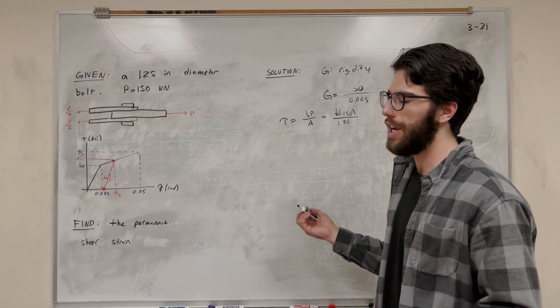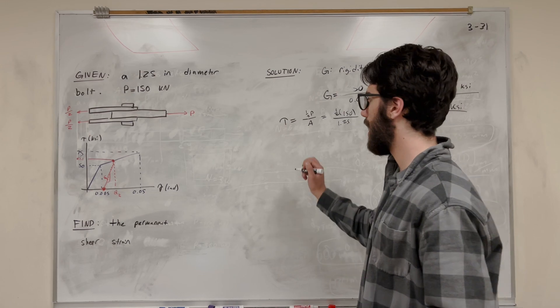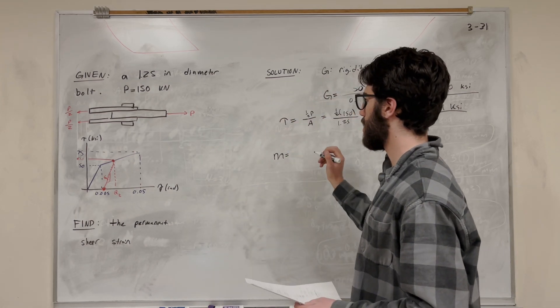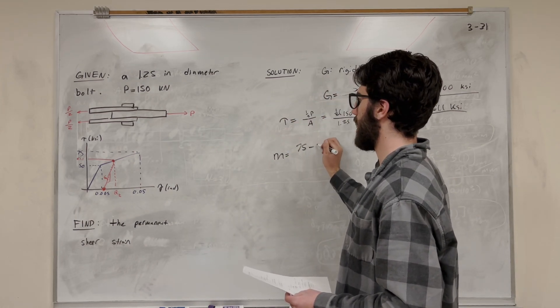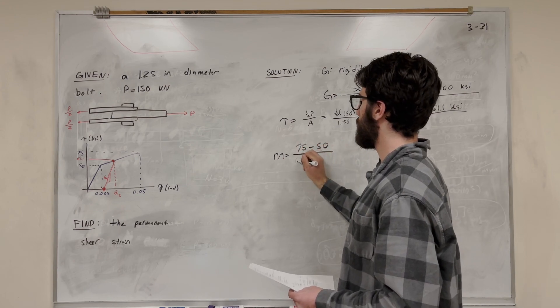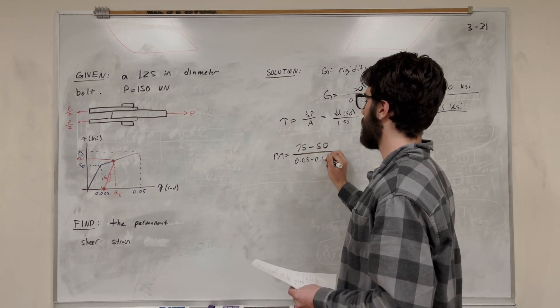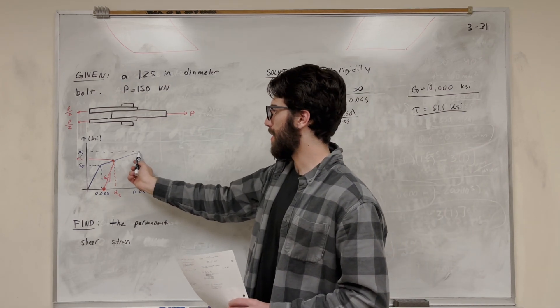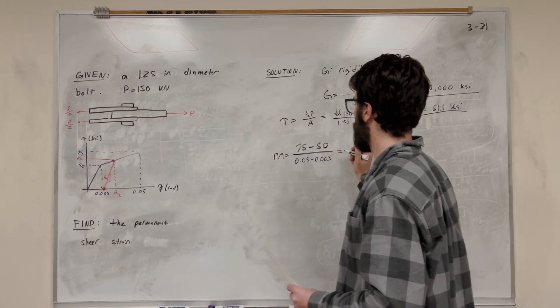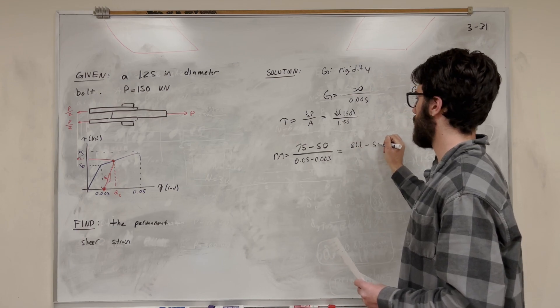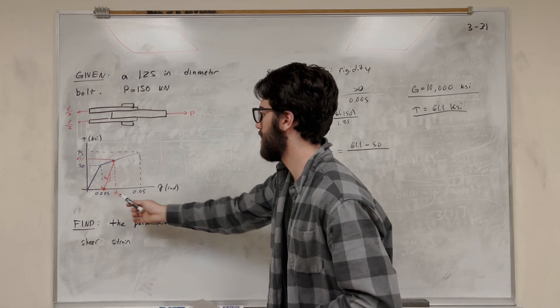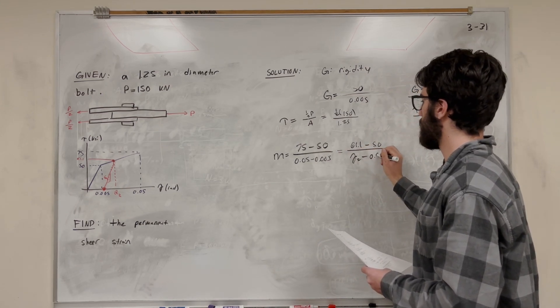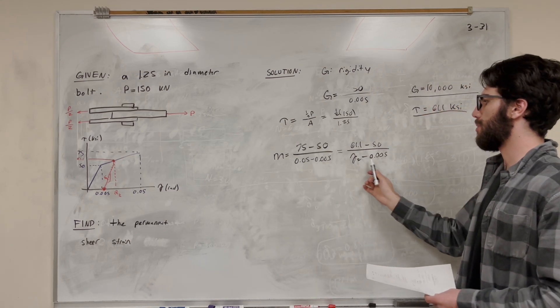So to do that, we can use a lot of ways to find this. I think the most easy way is to use slope. So we're looking at the slope of the second line, the one that's more flat. We know that the slope is rise over run, so it's going to be 75 minus 50 over 0.05 minus 0.005. But that's not all this slope is equal to. We can do the same thing, but for the shorter slope. So let's take 61.1 minus 50 over, now our x value for this is that gamma 2 that we're solving for. So gamma 2 minus 0.005. So you can see how this slope is going to be equal to this slope.